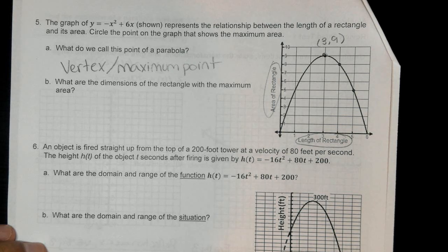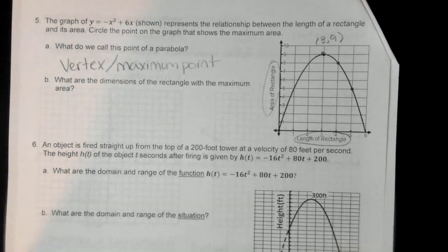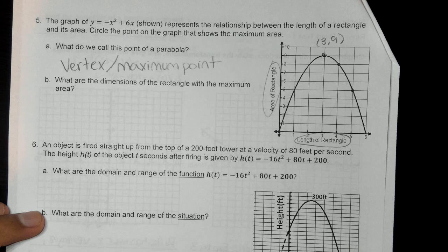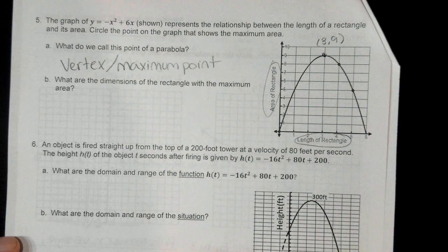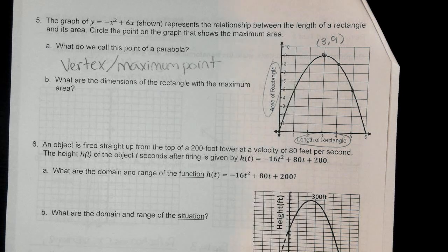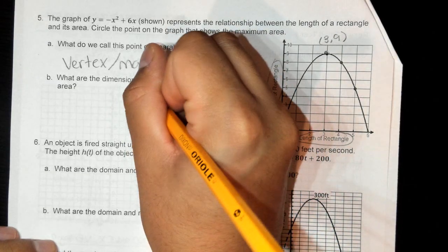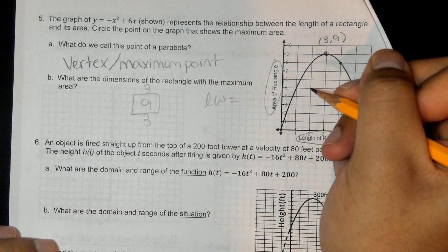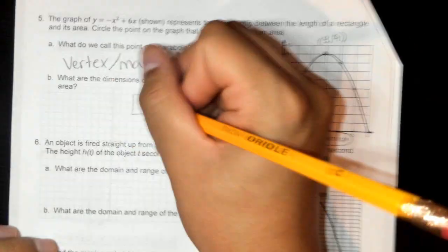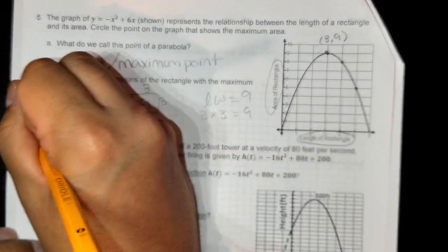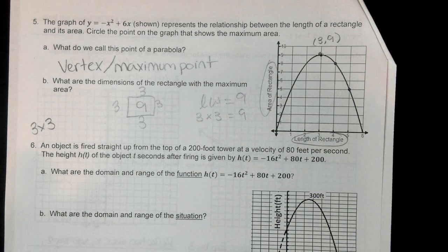What are the dimensions of the rectangle with the maximum area? If the length is 3 and the area is 9, we know area equals length times width, so 9 equals 3 times 3. The dimensions are 3 by 3 — this would actually make a square.